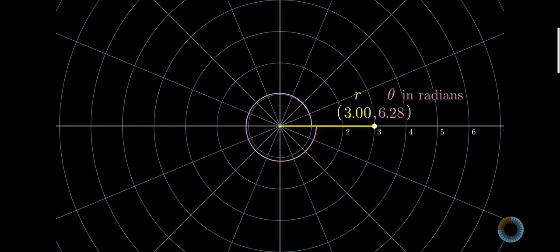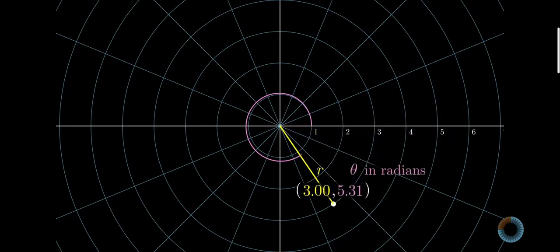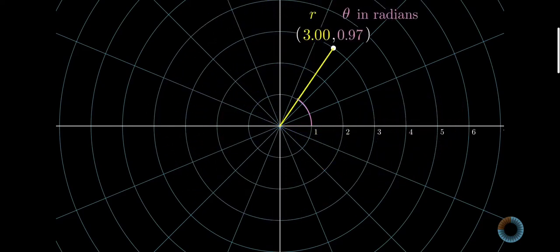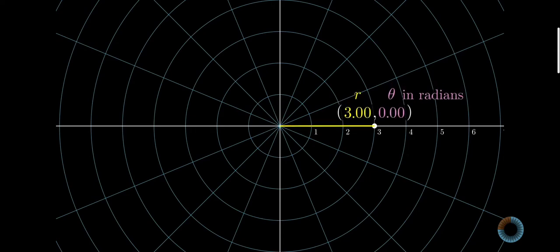And notice, polar coordinates are not unique, in the sense that adding 2pi to that second coordinate doesn't change the location that this pair of numbers is referring to.